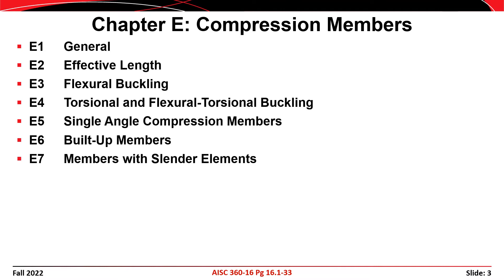Columns are covered in Chapter E of the AISC specification, titled Compression Members, and it's made up of seven sections. It begins with a general section, then a discussion of effective length, and then flexural buckling. The remaining sections are more advanced topics that we'll discuss if we have enough time.